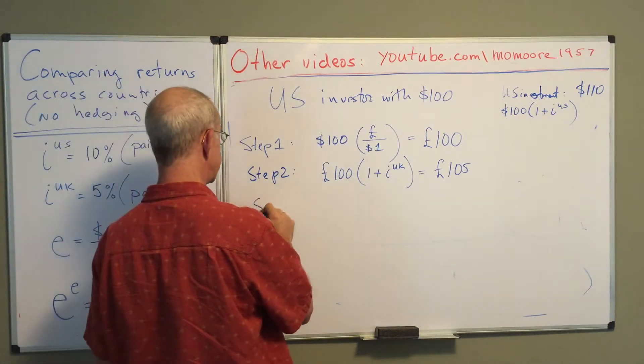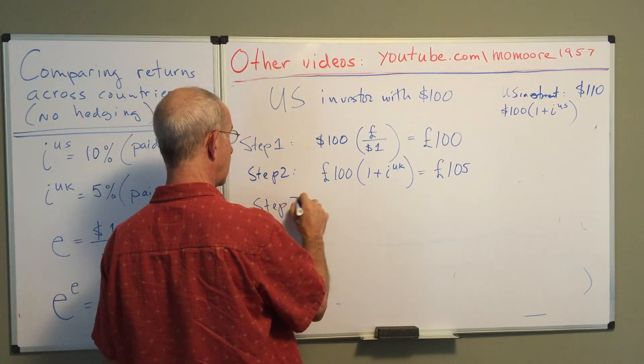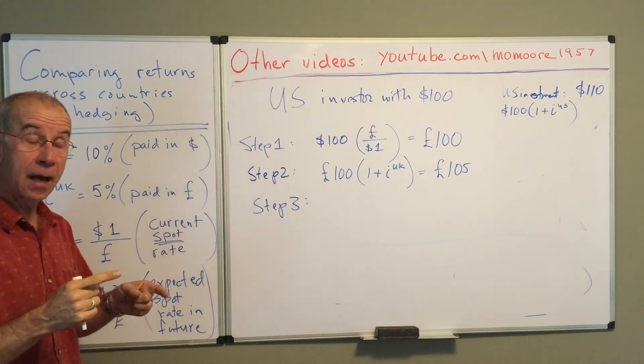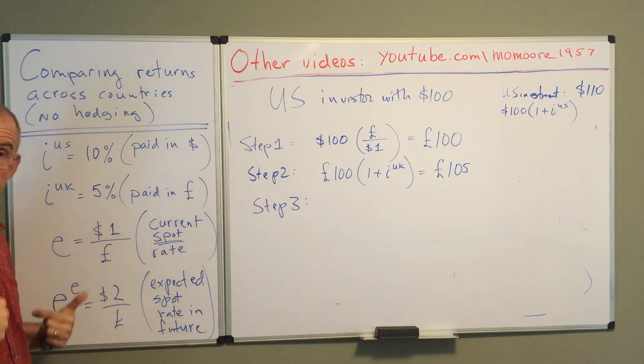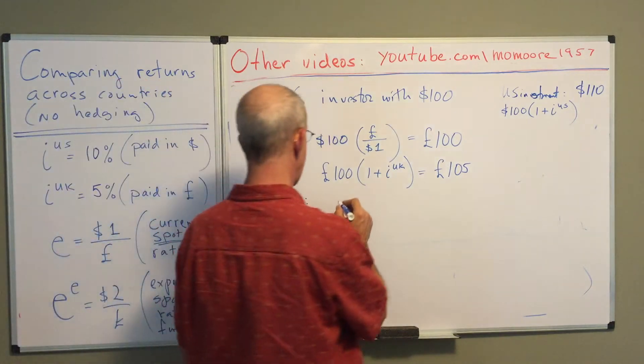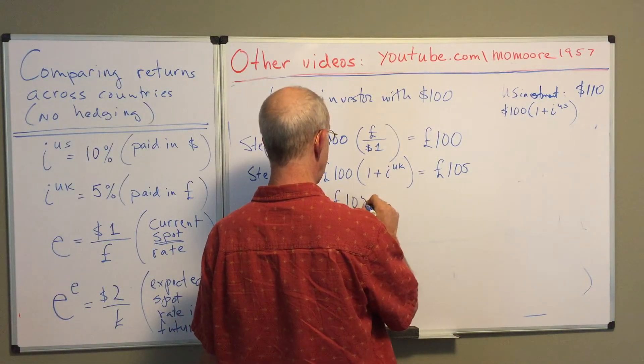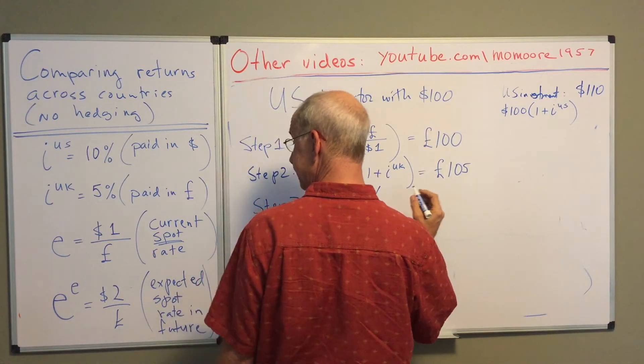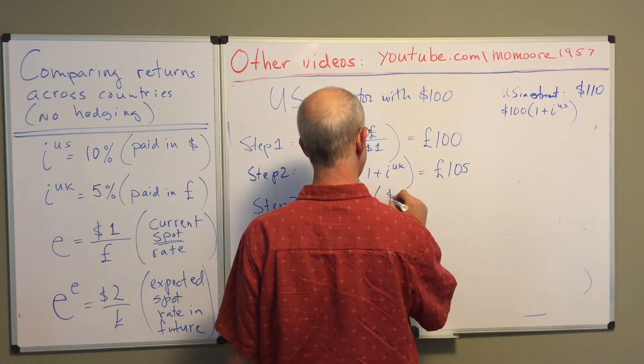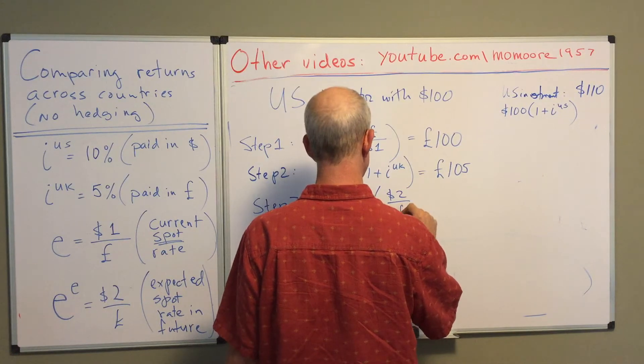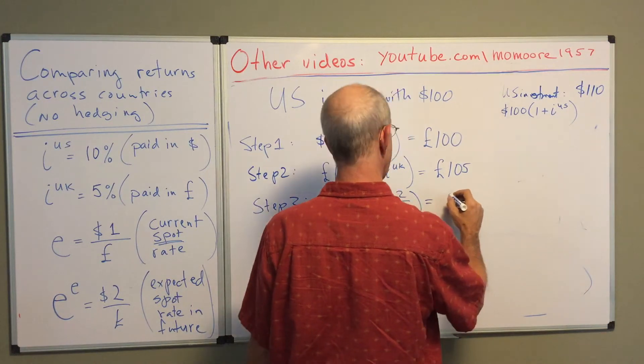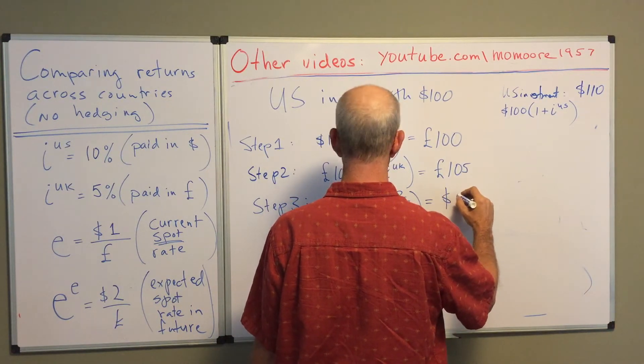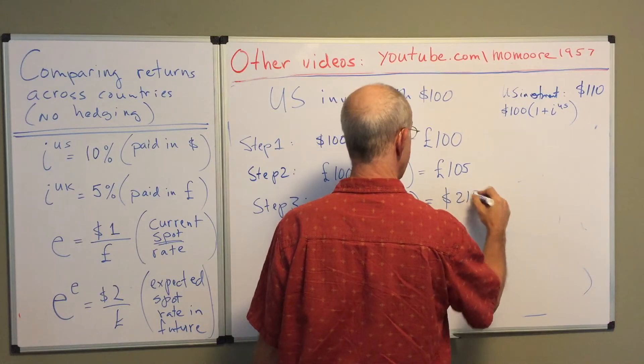The third step is to think about what they expect the exchange rate to be in the future and how many dollars they expect to get. Well, they're going to take the hundred and five pounds, use the exchange rate that they expect to see, the two dollars per pound. And what they're going to receive is two hundred and ten dollars.